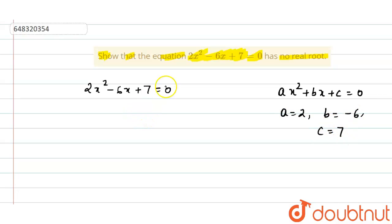We have to find the discriminant, right? So D equals to b squared minus 4ac that means minus 6 whole square minus 4 into 2 into 7.